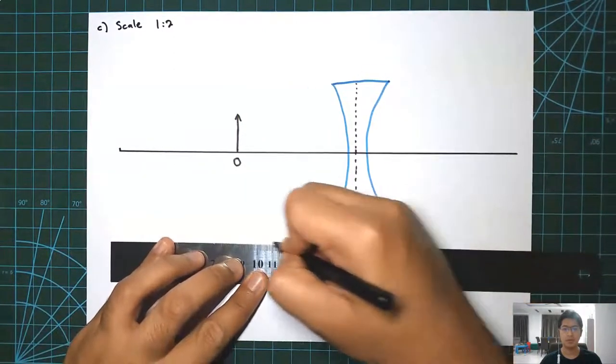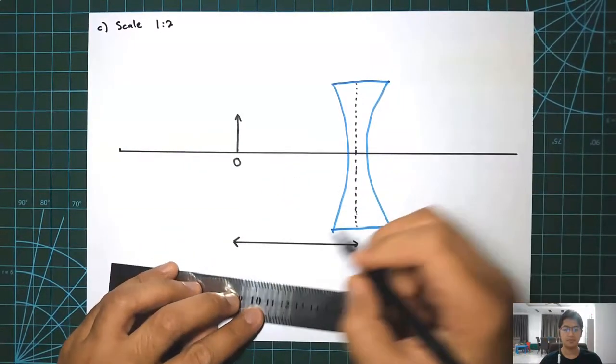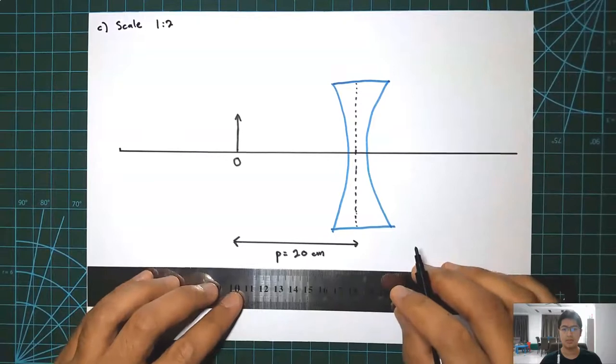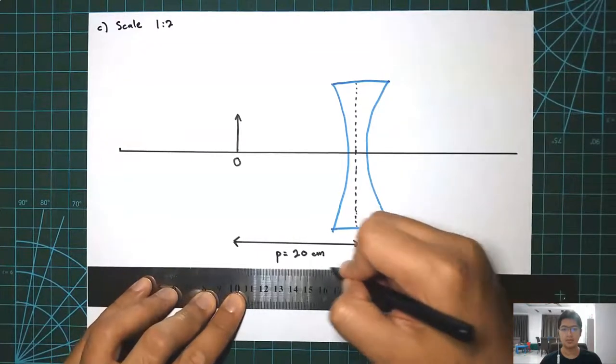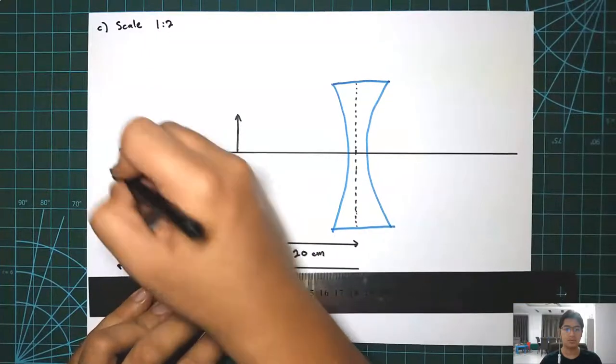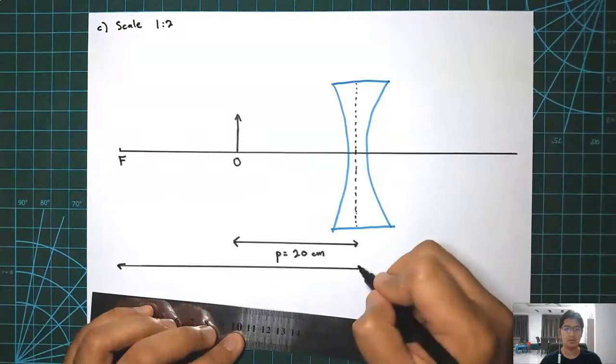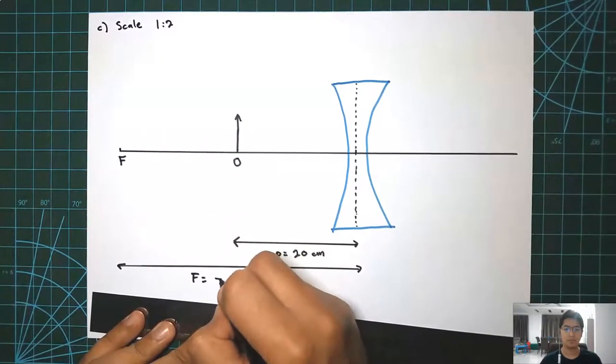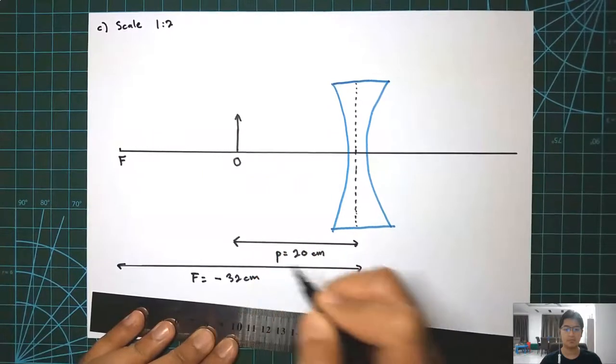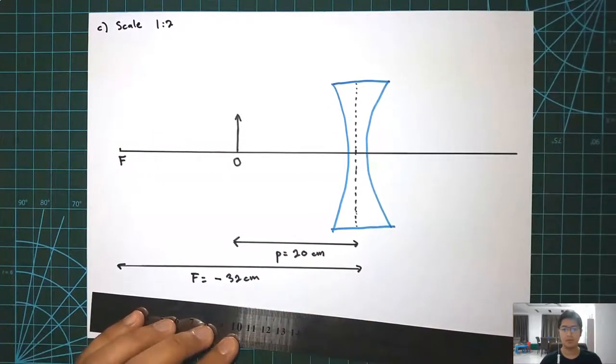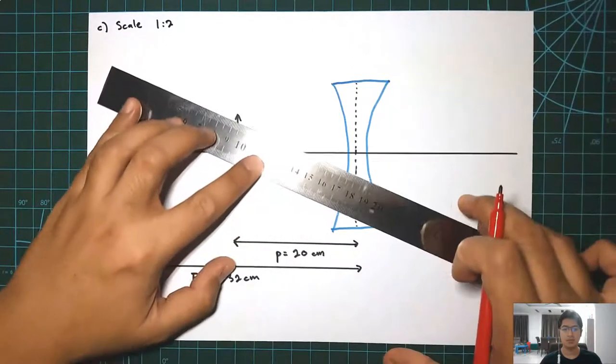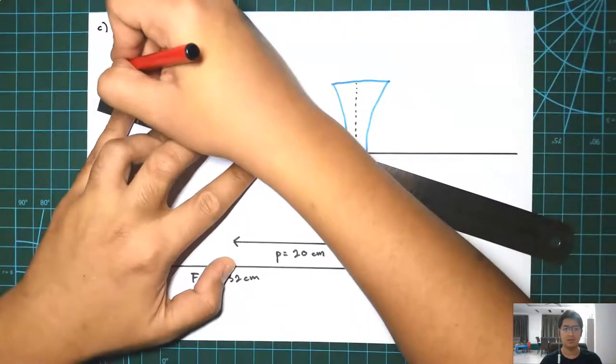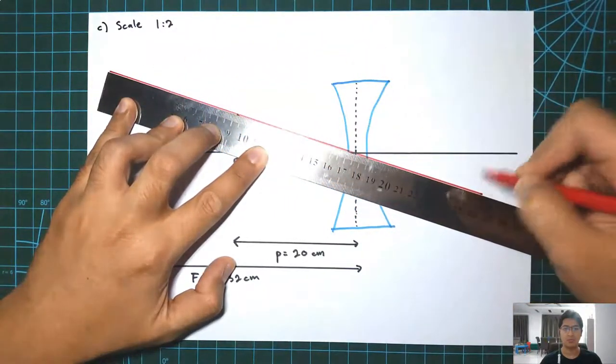So the object distance is 20cm as mentioned, as stated in the question. And then the focal line is 32cm or negative 32cm. The actual scale here is actually 16cm for the focal length. That's why we use ratio of 1 to 2.